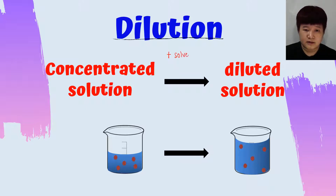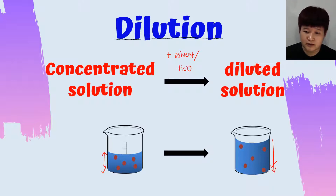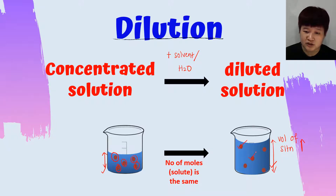The solvent we normally use will be water. If we look into the process of dilution, we have a concentrated solution, we add in solvent, and we get a diluted solution. What changes is the volume of solution — you can see that in the diluted solution the volume increases. But if you look at the number of moles of the solute, the number of moles of solute will remain unchanged.